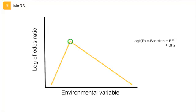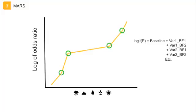For a simple model with only one environmental variable and only one knot, the final model includes a baseline, which is the mean of the response values, and the two basis functions on each side of the knot. However, most models will include multiple knots and multiple environmental variables, leading to more complex models.